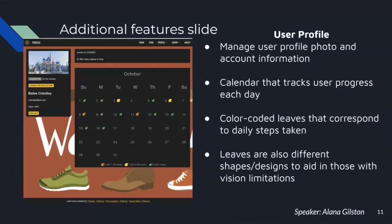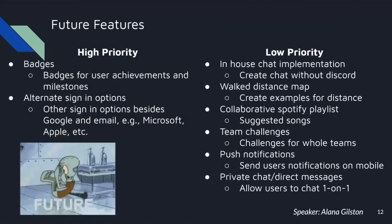For additional features, we also have a user profile which lets the user manage their profile photo and account information like their name and email. It has a calendar available that tracks the number of steps they take every day. There are three different leaves with different colors and shapes that denote how many steps a user took: the orange leaf is 5,000 to 7,500 steps, the yellow is 7,500 to 9,999 steps, and the green is 10,000 plus steps. There are also different shapes and colors to aid people who are visually impaired. For future high-priority features, we would have liked to implement badges and alternate sign-in options like Microsoft and Apple. Low-priority features included an in-house chat implementation, a walking distance map, a collaborative Spotify playlist, team challenges, push notifications to mobile users, and private chat and direct messages. Now I'm going to pass it off to Alyssa for the how slides.